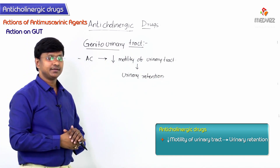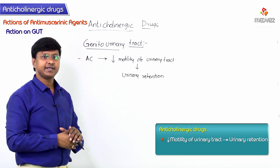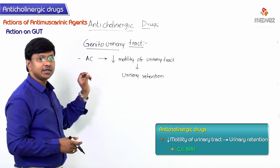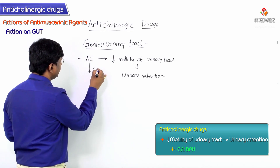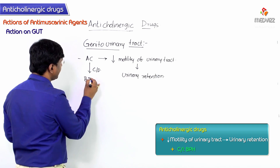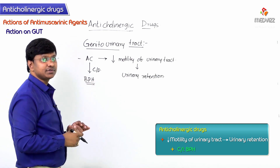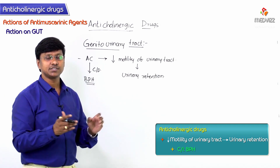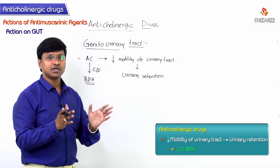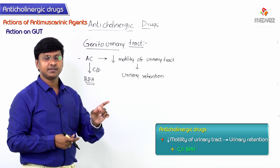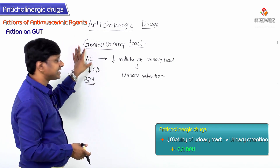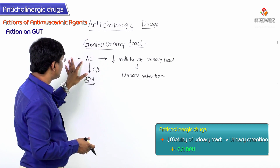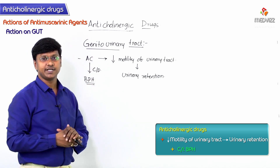Because these drugs cause urinary retention by decreasing the motility of the urinary tract, anticholinergic drugs are contraindicated in benign prostatic hyperplasia. In BPH patients, there is already difficulty in micturition and urinary retention because the hypertrophic prostate compresses the prostatic urethra. Giving anticholinergic drugs on top of BPH will further precipitate urinary retention.